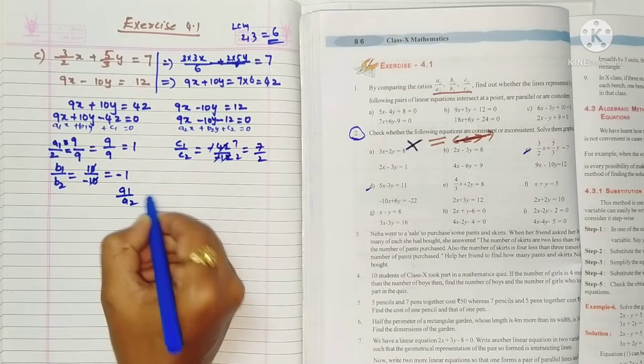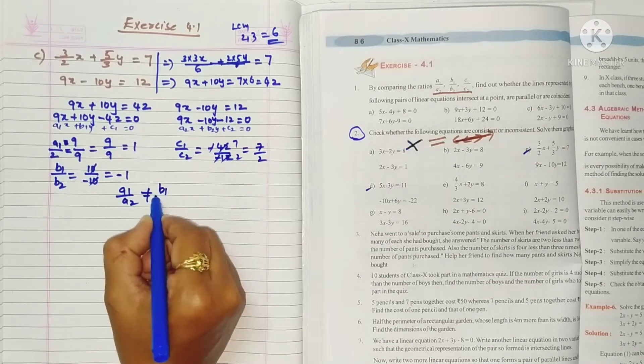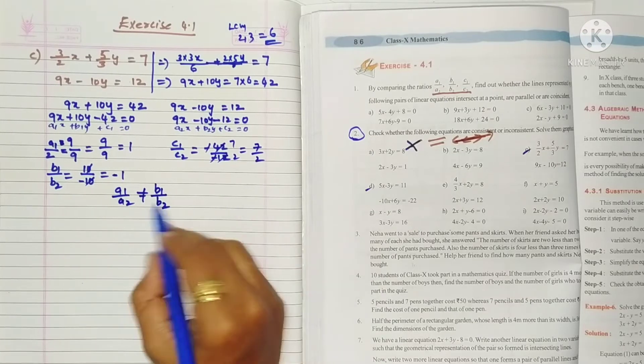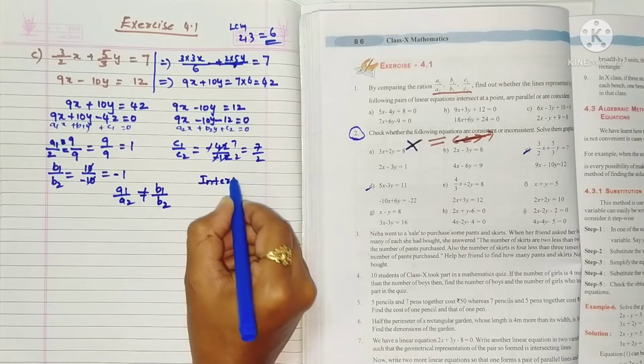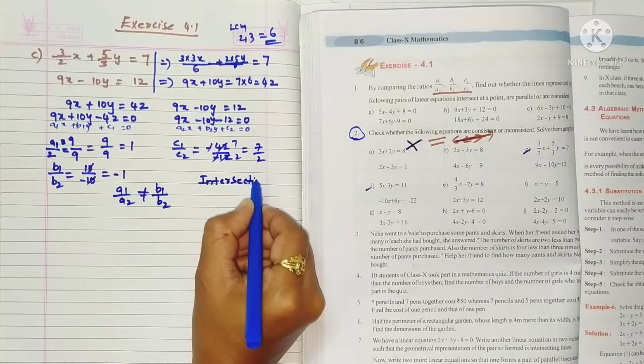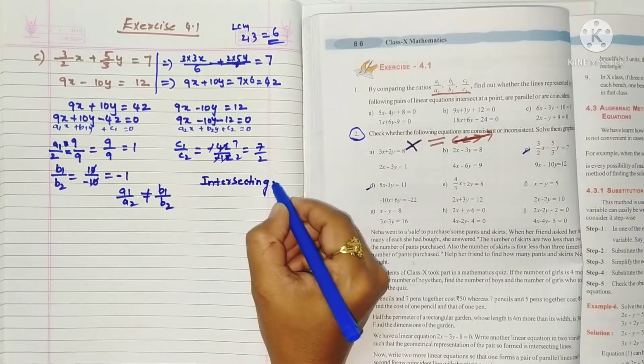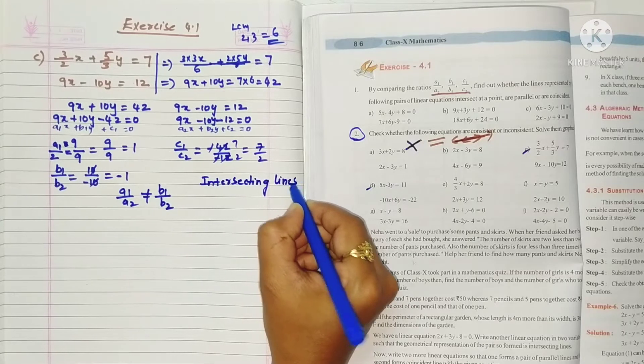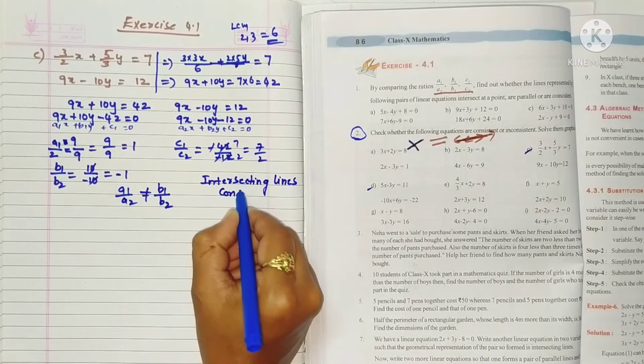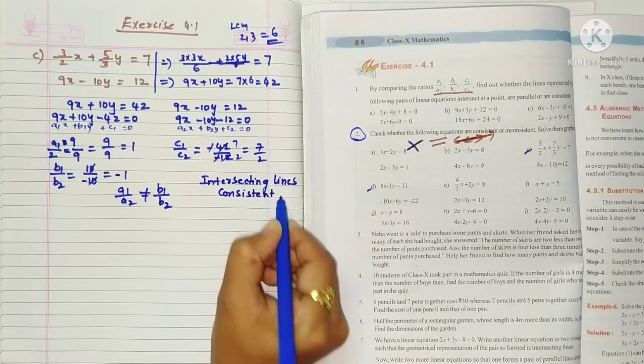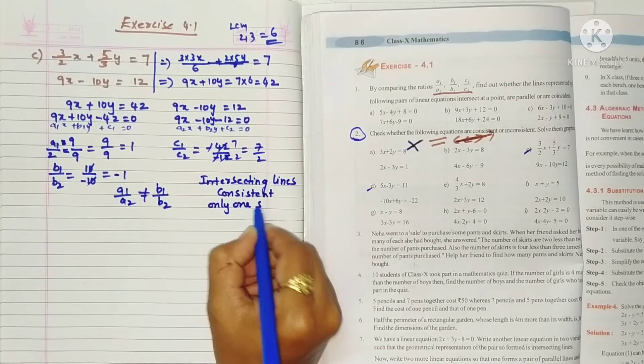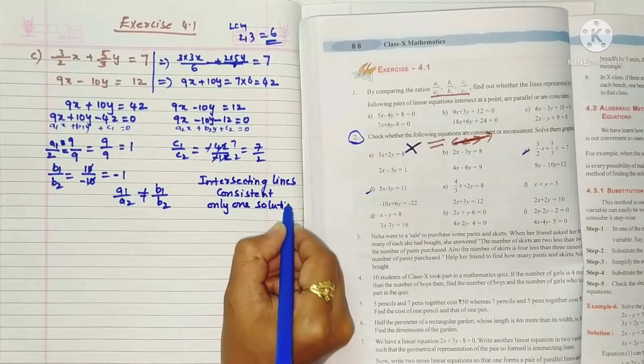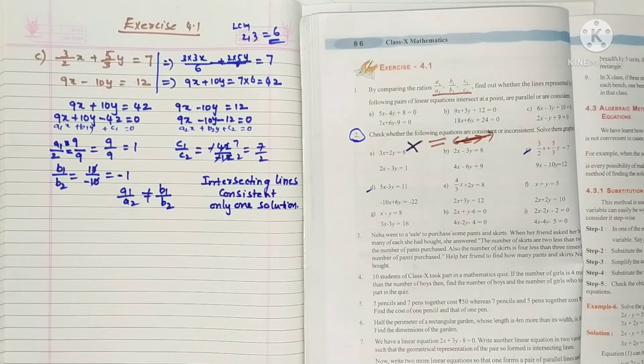So a1 by a2 not equals b1 by b2. So they are intersecting lines. Intersecting lines have one solution, so they are consistent. Intersecting lines and consistent, and you can write only one solution. So this is what we need to do.